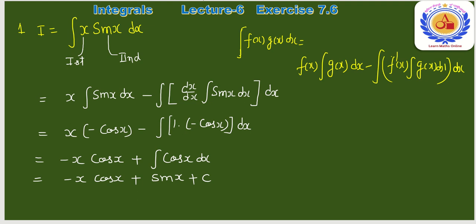sin(x) की integration −cos(x) है। Derivative of x is 1। Next step में minus बाहर आएगा, plus हो जाएगा: x·(−cos x) + ∫cos(x)dx।